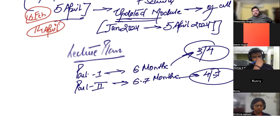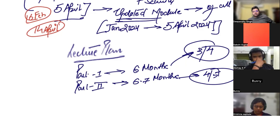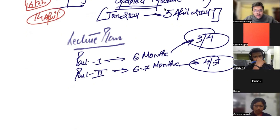Friday, Saturday, Sunday are for current affairs. Monday through Thursday are for static subjects. On weekends there will be a little extra effort because you need to cover current affairs, and later you'll also need to give tests and practice CSAT.